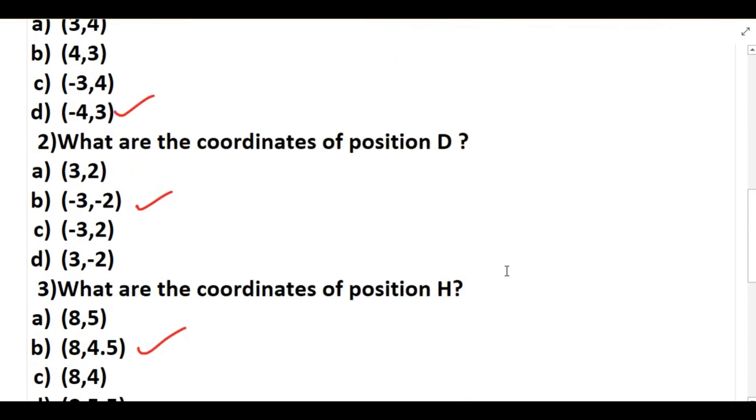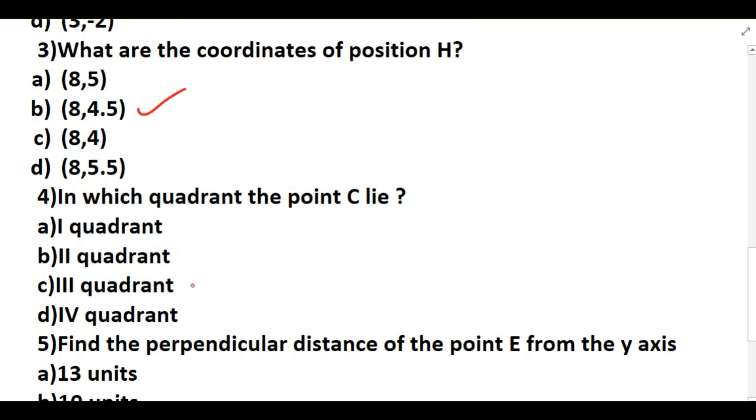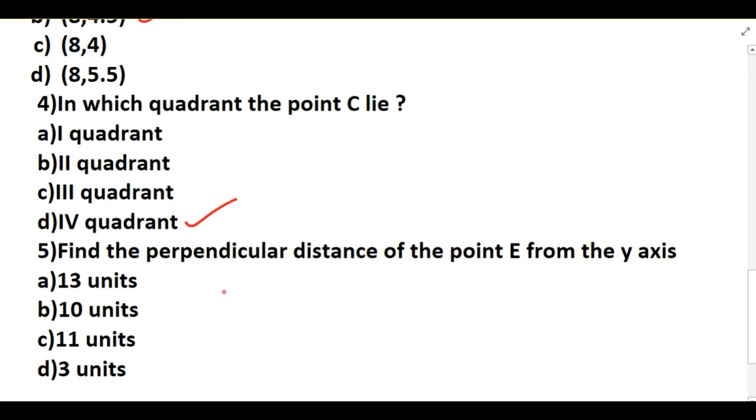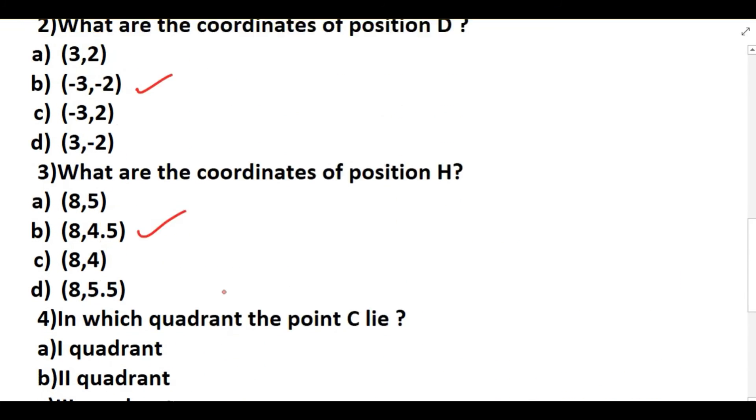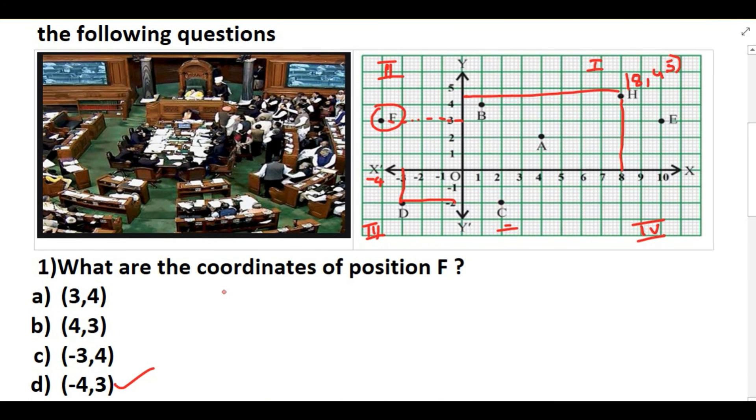So in which quadrant the point C lies? It lies in the fourth quadrant. Find the perpendicular distance of the point E from y-axis. So first find out E, we have to, then we have to find out the perpendicular distance from y-axis.